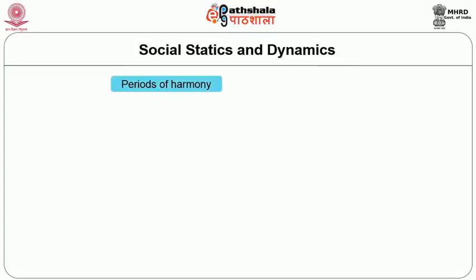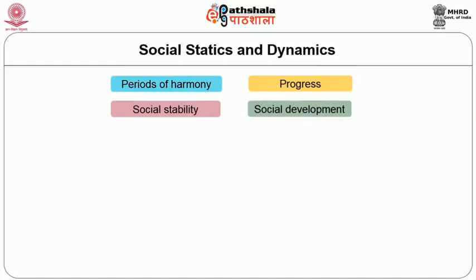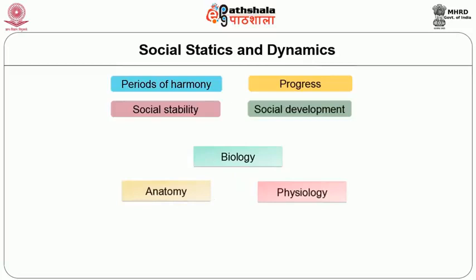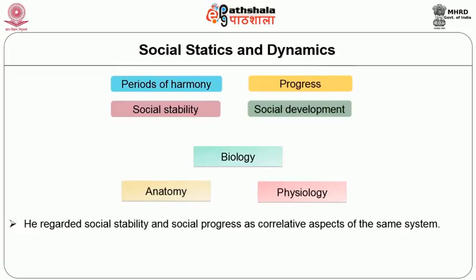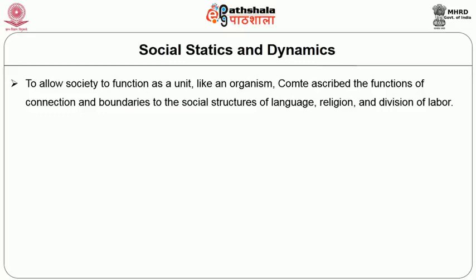Social statics and dynamics: For Comte, the difference between periods of harmony and social stability compared to those of progress and social development was similar to the distinction in biology between anatomy and physiology. Thus he regarded social stability and social progress as correlative aspects of the same system. Although Comte approached human societies as analogous to a biological organism, he was aware of the differences. To allow society to function as a unit like an organism, Comte ascribed the functions of connection and boundaries to the social structures of language, religion, and division of labor.